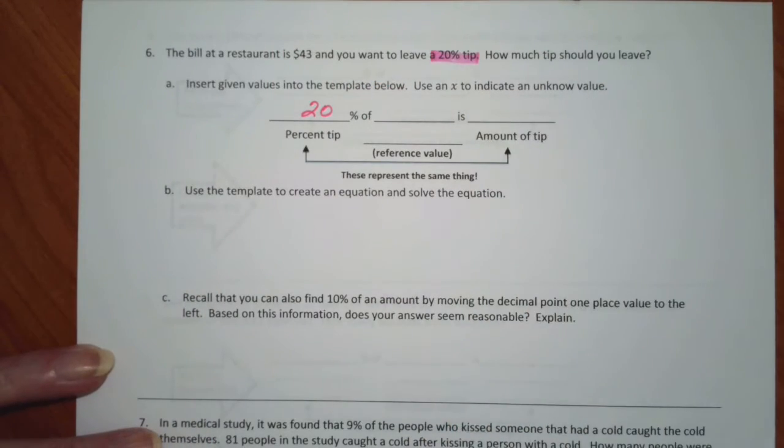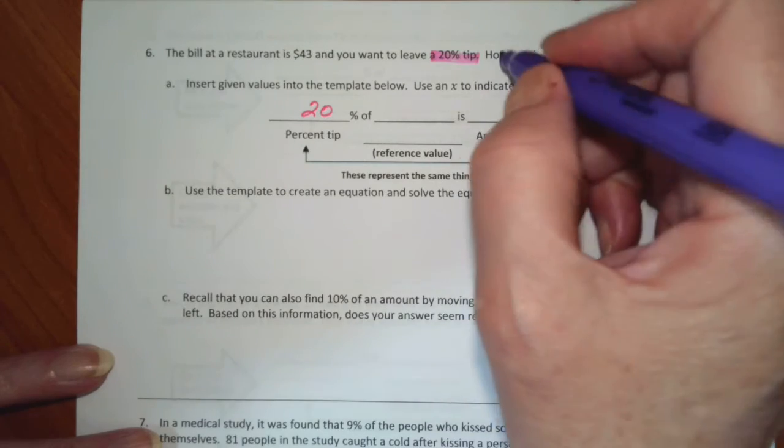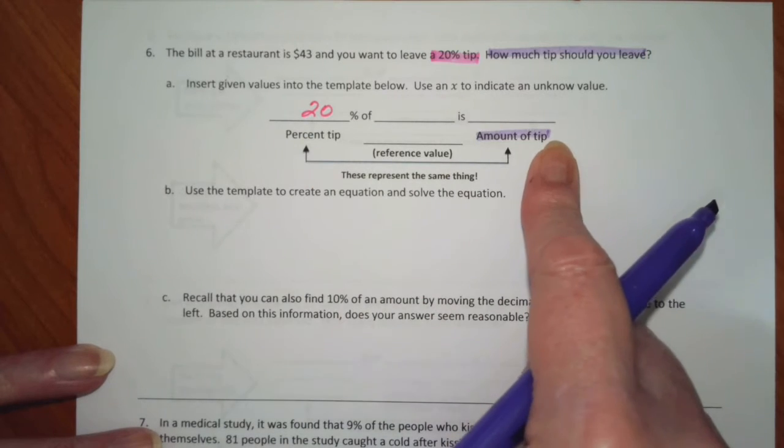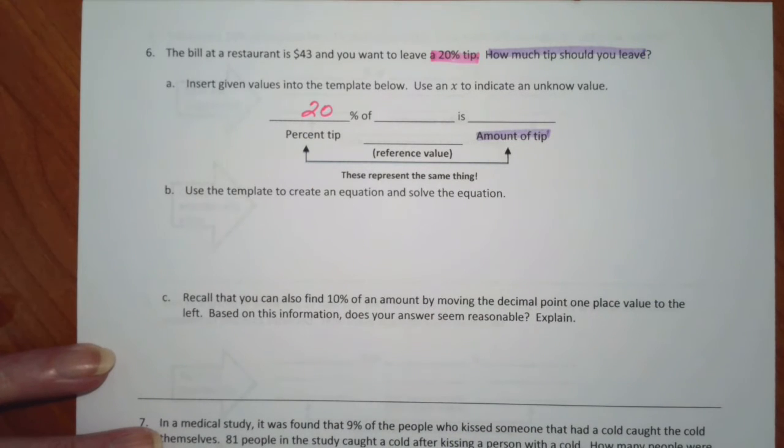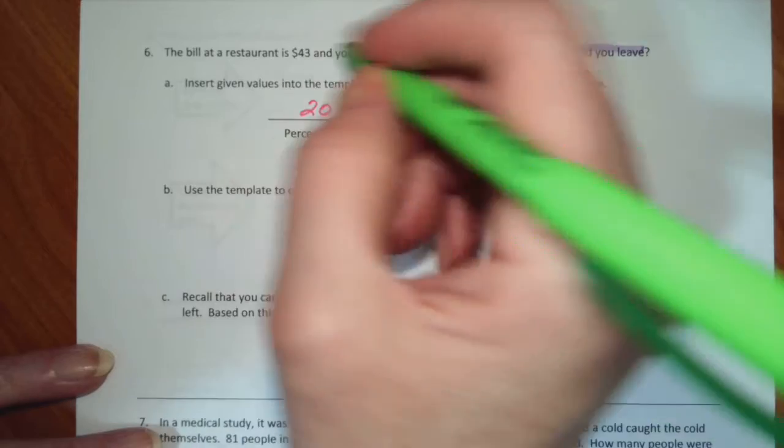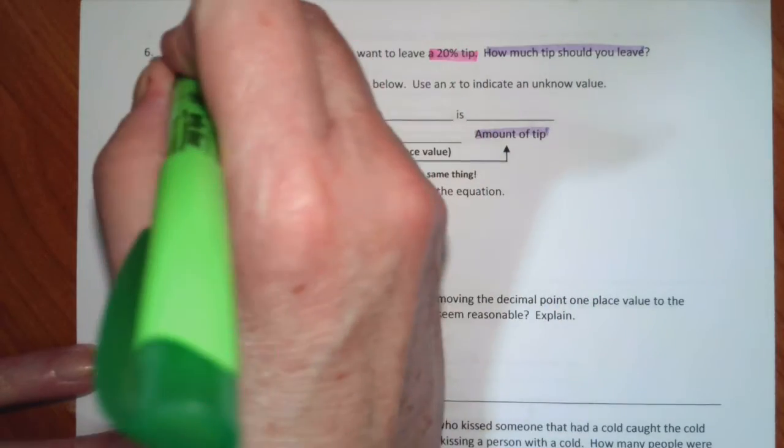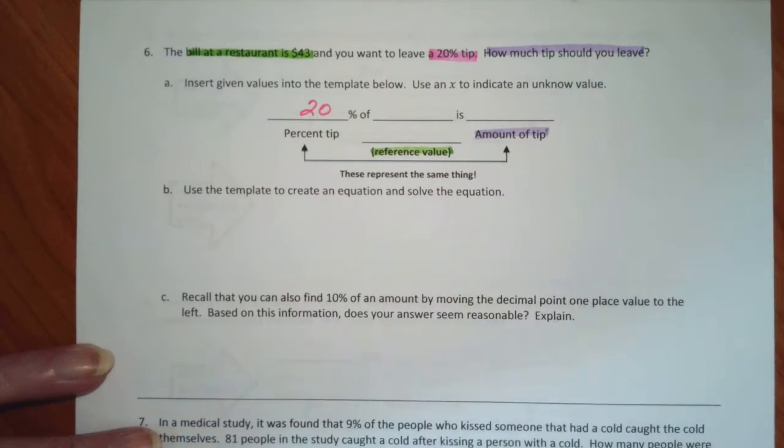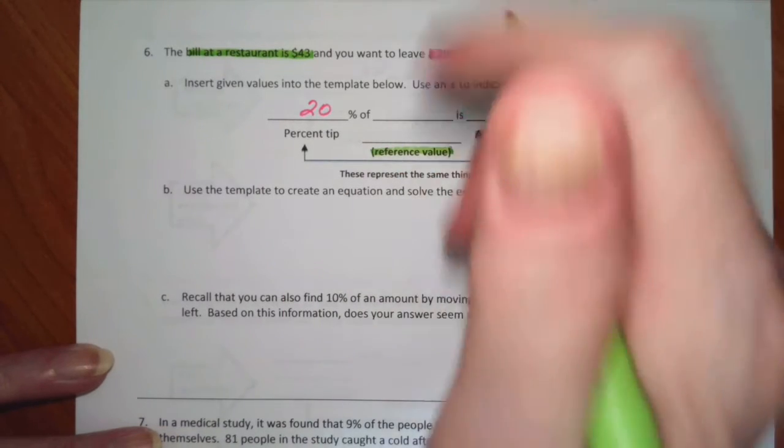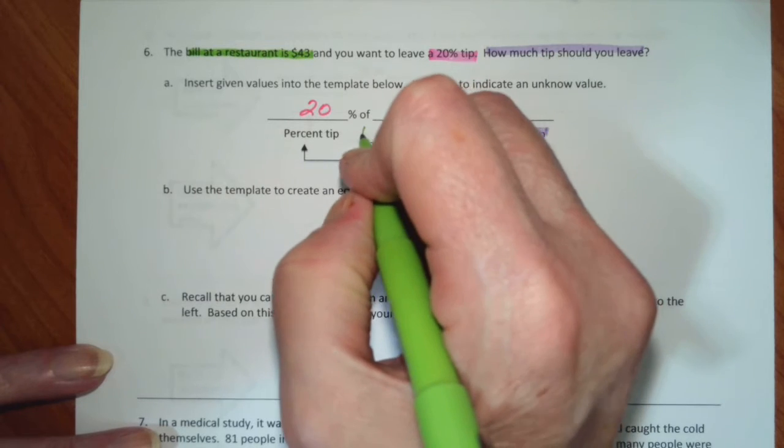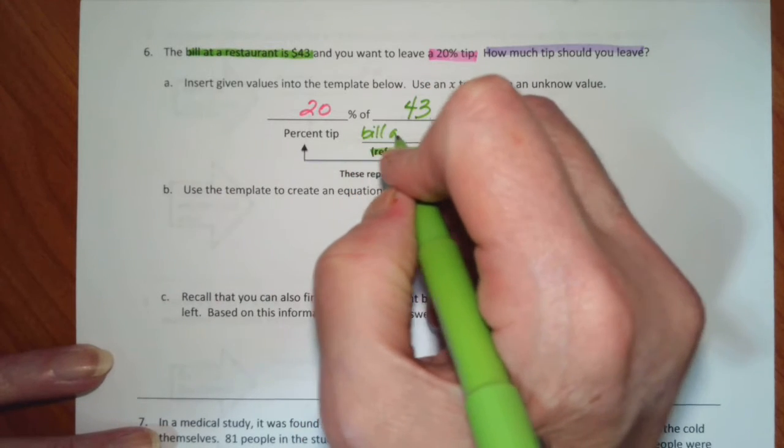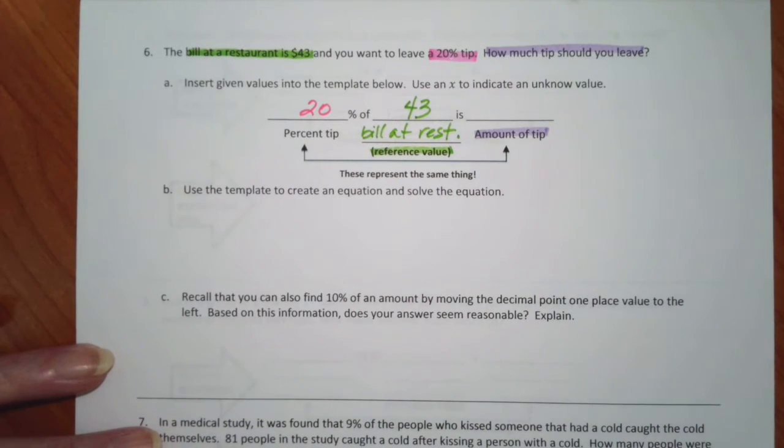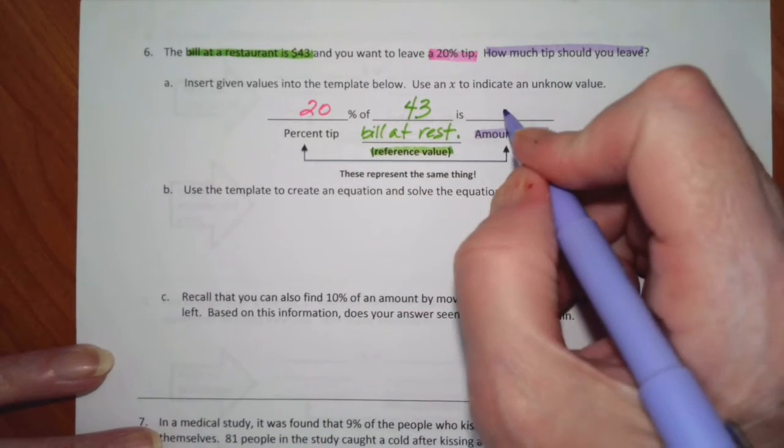The percent of tip is 20%. How much tip should you leave? That's what we're looking for. Since this is the tip, this is the tip, which tells us in the middle here that the bill at the restaurant is $43. That is our reference value, the bill at the restaurant.